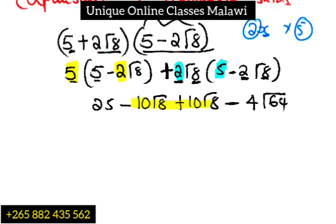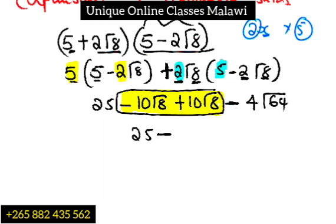The 10 root 8 and 10 root 8 negative cancel out, or positive. It's like minus 3x plus 3x, so the answer is zero. Then we have 25 minus, whatever is that series. Root 8 times root 8 is 8, so 4 times 8 is 32. The answer is 25 minus 32, which is negative 7. That's our answer, negative 7.